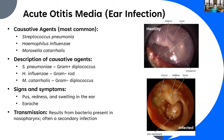Streptococcus pneumoniae is a gram-positive diplococcus — we'll see this again a few more times in this video. Haemophilus influenzae is a gram-negative rod. And Moraxella catarrhalis is a gram-negative diplococcus — and that goes for all Moraxellas. Similar to Neisseria, you can keep that in mind for your study guide.